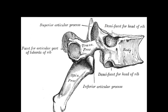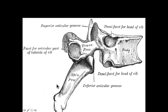Any other feature on a bone is often just called a process. Here you've got the spinous process and the transverse process — this would be sticking out toward you if it were three-dimensional. Any process is just the name of a bone outgrowth, usually for muscle attachment, and sometimes for articulation with another bone.